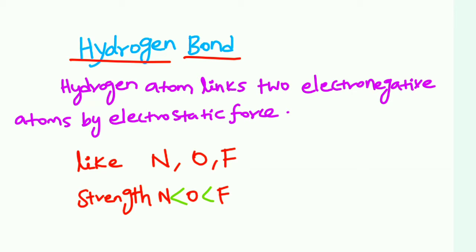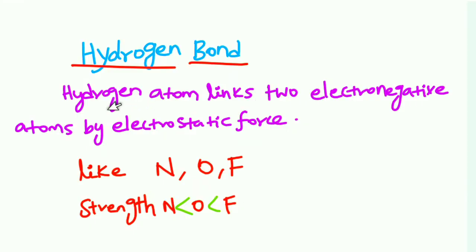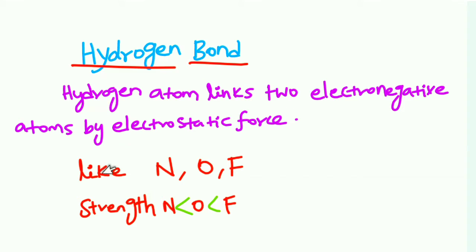This is a very easy topic — hydrogen bond. A hydrogen atom links two electronegative atoms by electrostatic force. This is a hydrogen bond. The two electronegative atoms involved are like nitrogen, oxygen, and fluorine. These have higher electronegativity.